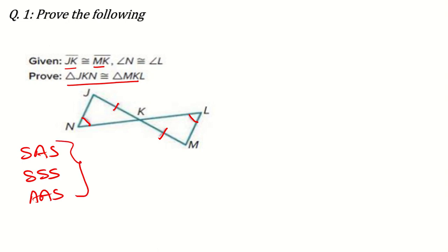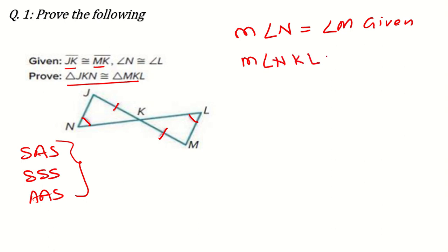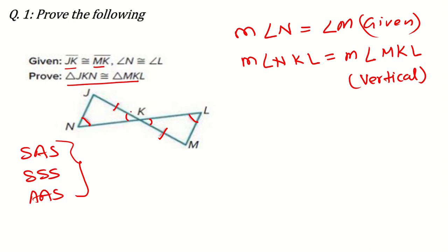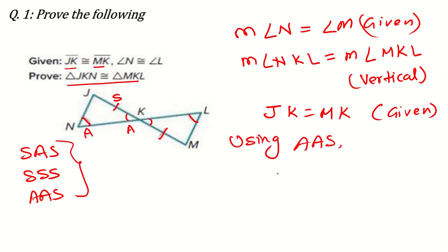Measure of angle N is equal to measure of angle L — that is given. Next, measure of angle NKJ will be equal to measure of angle MKL because of vertical angles. And JK is equal to MK, which is also given. So using AAS criteria, triangle JKN is congruent to triangle MKL. Like this, we can do the question.